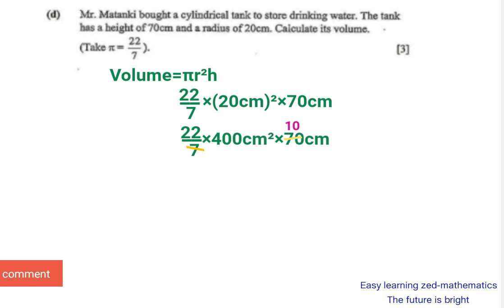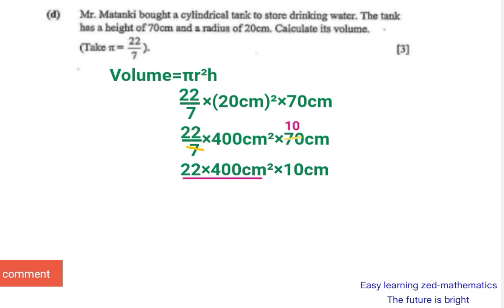After cancellation, we are left with 22 on the fraction part, 400 centimetres squared in the middle, and 10 centimetres where there was 70. Next, multiply 22 by 400 centimetres squared.